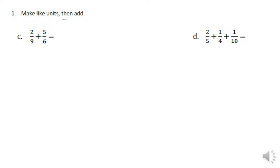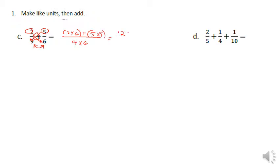For the next problem, we set it up the same way. This time I'm going to put just one line because on both fractions we have the common denominator, which is nine times six. On top here we're doing two times six, putting our operator in, and then we have five times nine. That gives us 12 plus 45 over 54, which gives us 57 fifty-fourths.